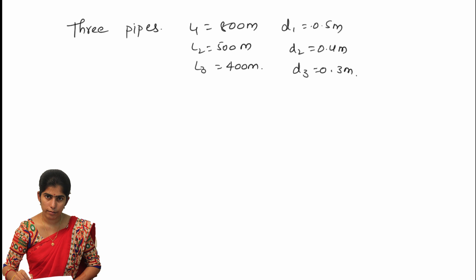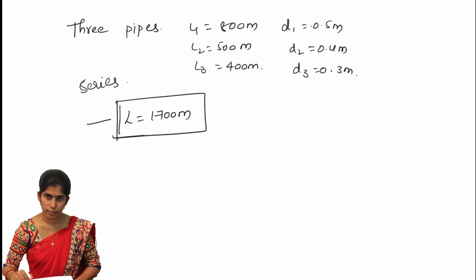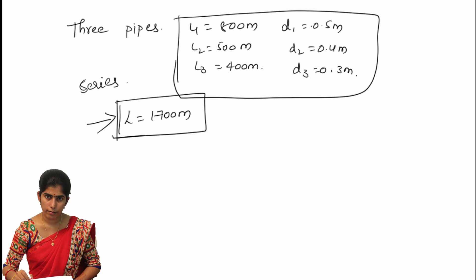These three pipes are connected in series. They ask us to find out — these pipes are to be replaced by a single equivalent pipe having a length of 1700 meters. So they ask us to find the diameter D of the equivalent single pipe.